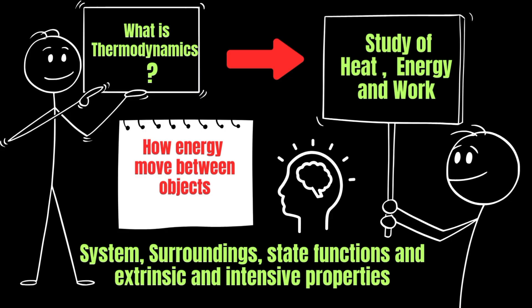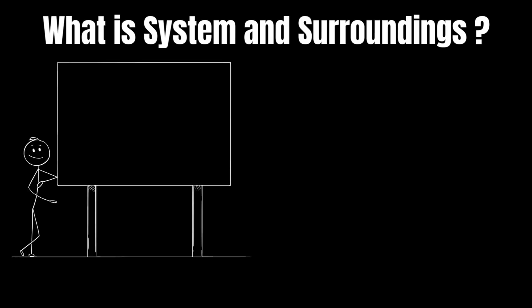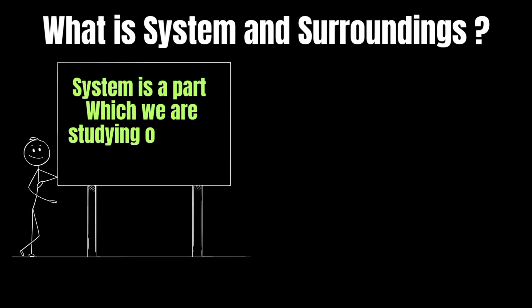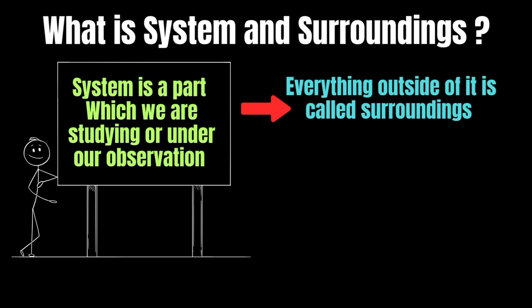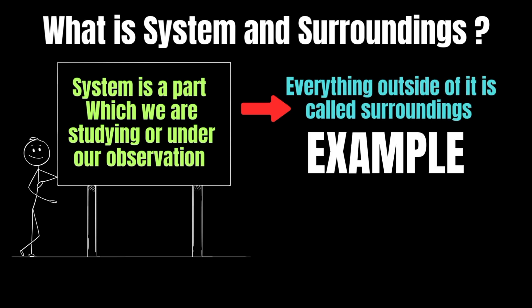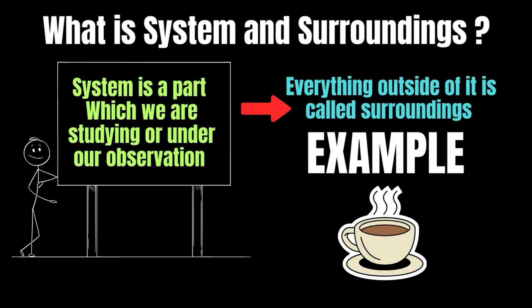Let's understand what is a system and surroundings. In thermodynamics, a system is the part which we are studying, or simply the part which is under our observation, and everything outside it is called the surroundings. For example, if we take a cup of hot coffee, the coffee inside the cup is the system, and everything around it, including the air, is the surroundings.